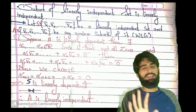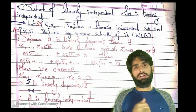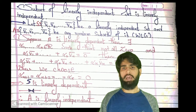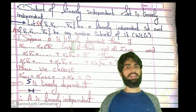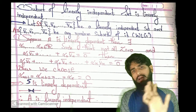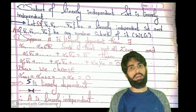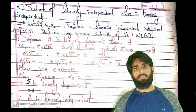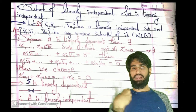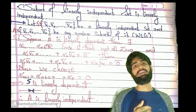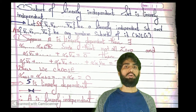I assume A, containing n elements v1 bar to vn bar, to be any random subset of S. We are assuming without loss of generality — I have chosen the first n elements with k greater than n. In other cases it works the same way. So S is a linearly independent set, A is any subset of it, and my claim is that A is also linearly independent.